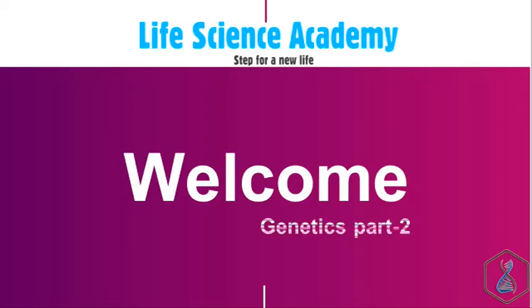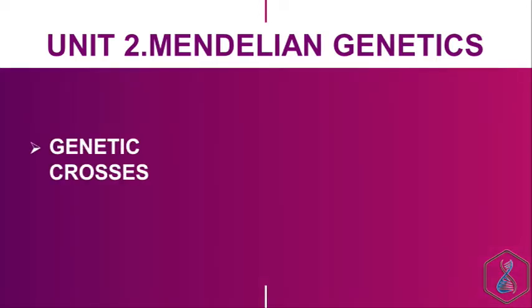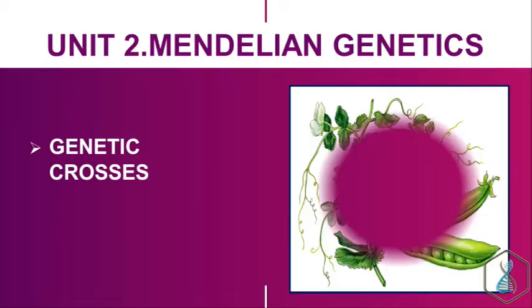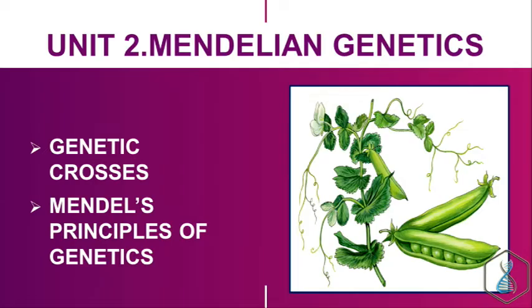Welcome to Live Sense Academy online lectures. In our genetics class, we are going to discuss Mendel and genetics. In the previous class, we discussed basic concepts of genetics. In this class, we will focus on the genetic crosses done by Gregor Johann Mendel, the father of genetics, his famous experiments in garden pea Pisum sativum, and the fundamental principles of genetics — the principle of segregation, principle of independent assortment, and the concept of dominance.